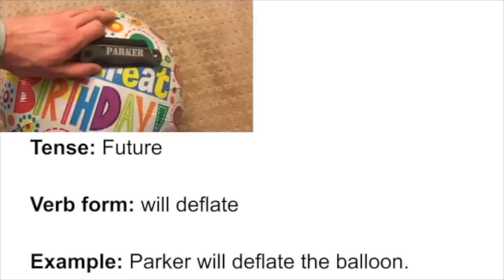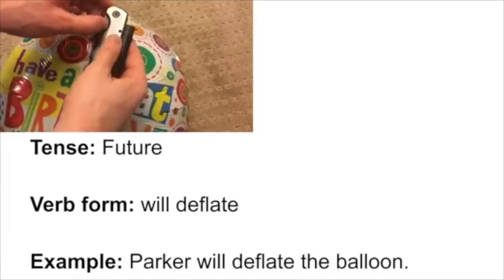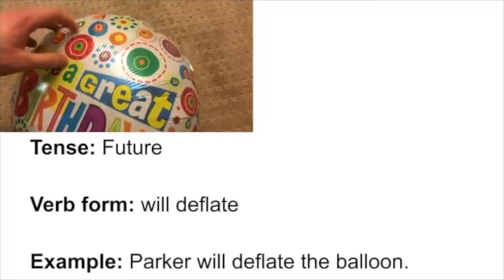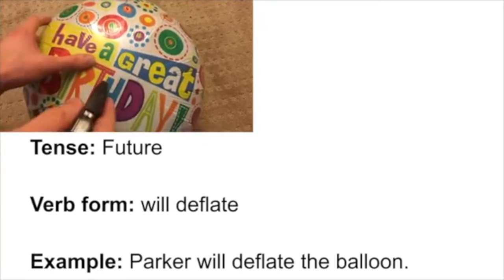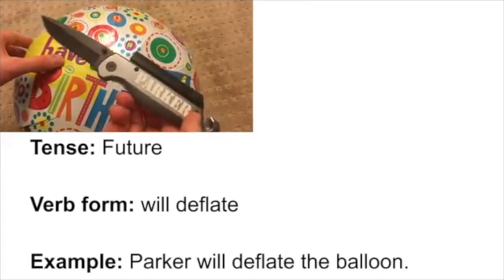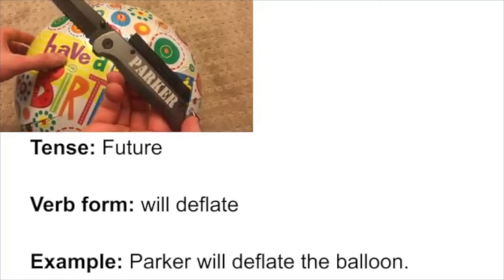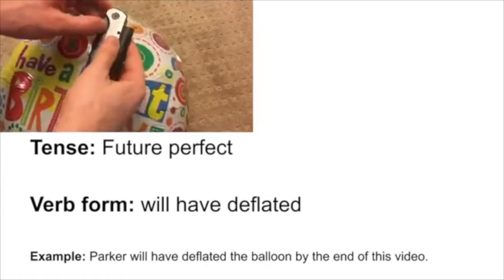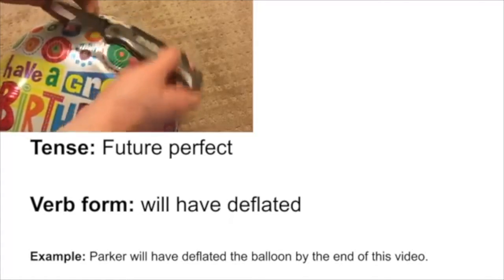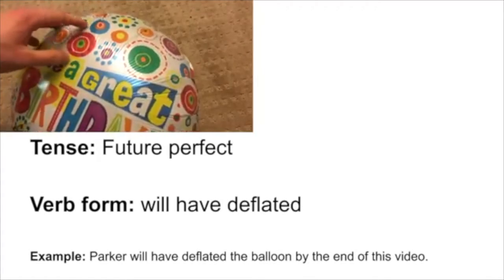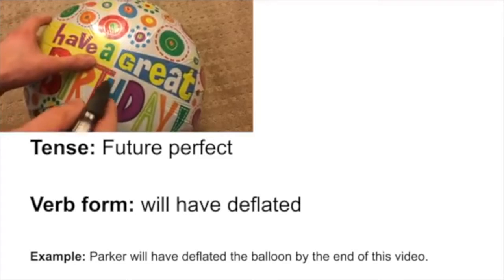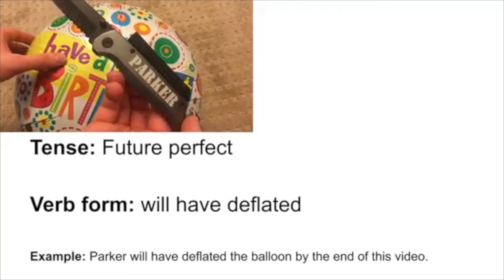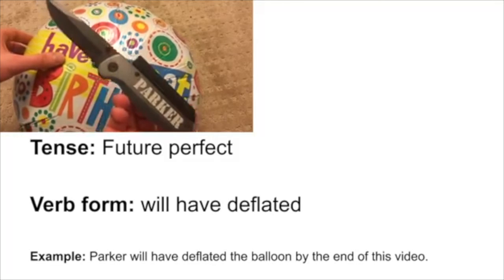Let's start with the future tense, which is used for an action that hasn't occurred yet. To make the future tense, we put the word 'will' in front of the base form, giving us 'will deflate' — for example, 'I will deflate the balloon.' The future perfect tense shows that an action will happen by a specific future time. We put 'will have' in front of the past tense form, giving us 'will have deflated' — for example, 'Parker will have deflated the balloon by the end of this video.'